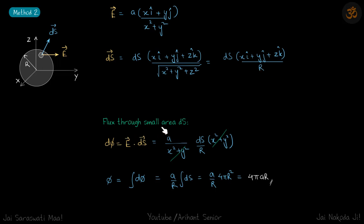Now we can calculate the flux through that small area ds. That should be e dot ds. When we do the dot product, the dot product of k cap will become zero with both i and j. What you will get is x square plus y square, which will get cancelled.